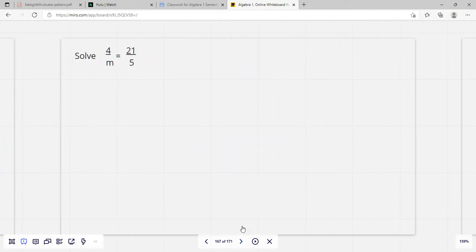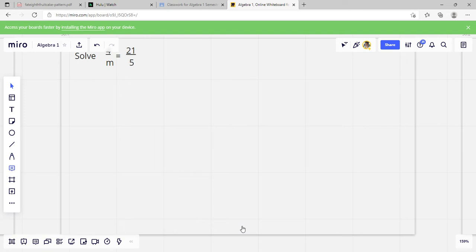So Ratio Problems, when we have a ratio, we're saying that two things are equal and to figure out what our missing number is, we've got 4 over M equals 21 over 5. We're going to cross multiply, so we're going to multiply here and we're going to multiply here. So if we do M times 21, that will be 21M, and then 4 times 5 equals 20.